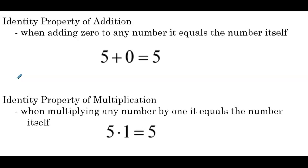So the identity property is all about keeping a number as itself. For addition, that means we're just going to add 0. For multiplication, we're going to multiply by 1. Think about it this way — your identity is who you are, you don't want to change that. So under addition, how do we leave that unchanged? Under multiplication, how do we leave that unchanged?